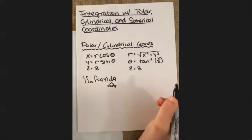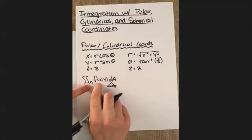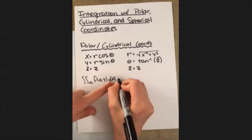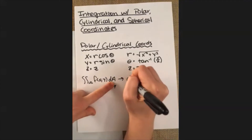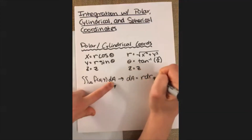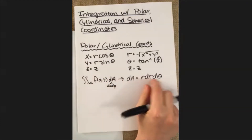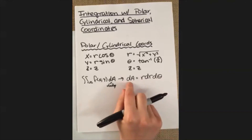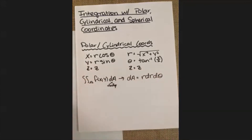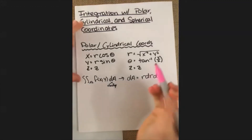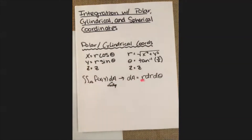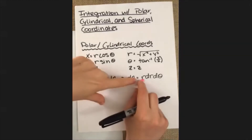The tricky part is dA — we've seen how to deal with functions and regions, but this piece turns into r dr dθ. This r is extremely important. Don't ever forget it. The reason it's there is similar to why extra pieces appear in u-substitution. It's a bit beyond scope to explain exactly why, but just don't forget it when making the swap.